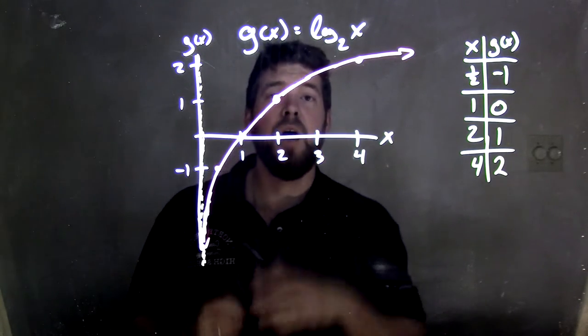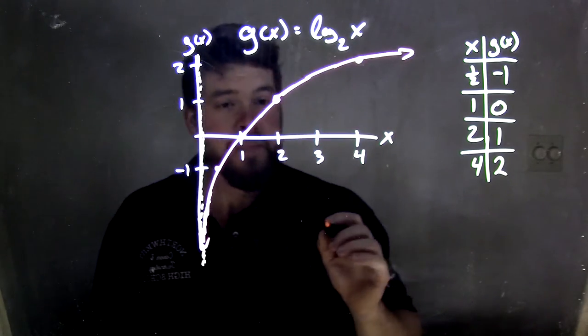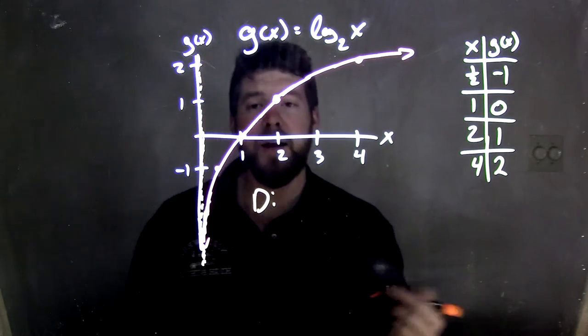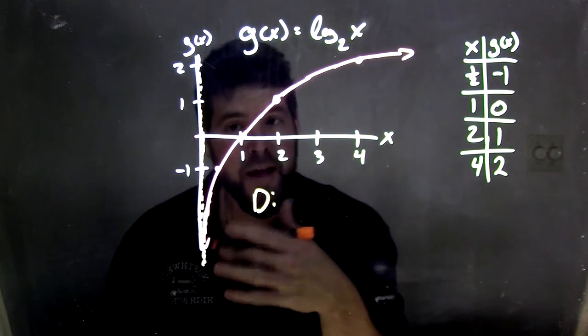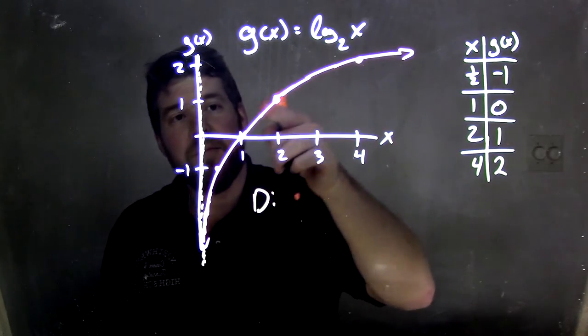So let's go analyze this graph here. Our g of x equals log base 2 of x. Well, what we know is our domain. Our domain is the most left x value, or the most negative x value, to always the most right x value.